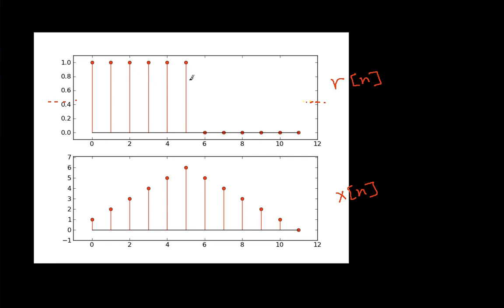And one of the useful things to know about square waves is that if you convolve a square wave with itself, you get a triangle. And so, x of n, as I've plotted it here, this is a re-plot from the previous screen, this is r of n convolved with itself.